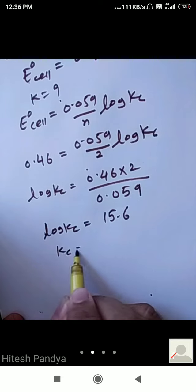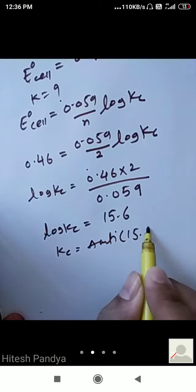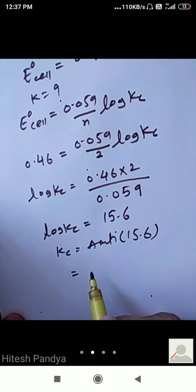Kc calculate karna hai kari antilog. Antilog of 15.6 equals approximately 3.98 into 10 to the power 15.